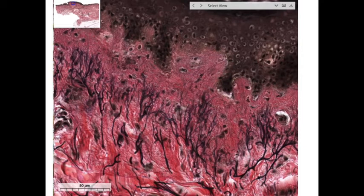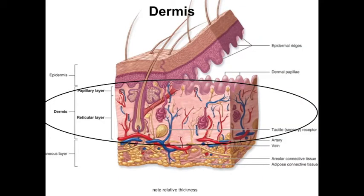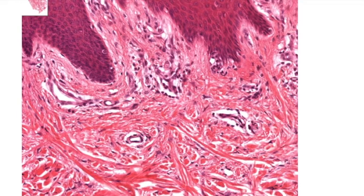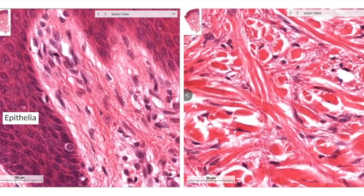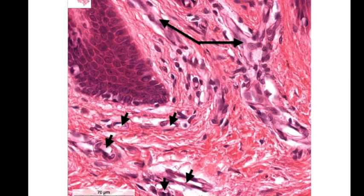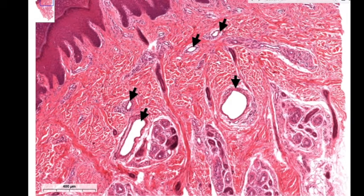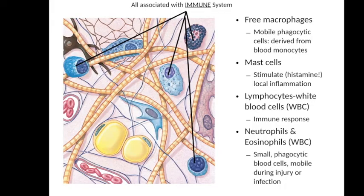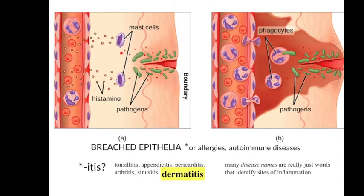The connective tissue's gel-like ground substance serves as a substrate for the diffusion of nutrients and waste to and from the epidermis and accessory structures like hair follicles and glands. These are brought in and out by the extensive blood supply of the dermis. The dermis also has resident immune cells present in the event of a breach in the epidermal layer, and blood vessels can bring in additional immune cells if needed — the connective tissue layer is the stage for the inflammation response.